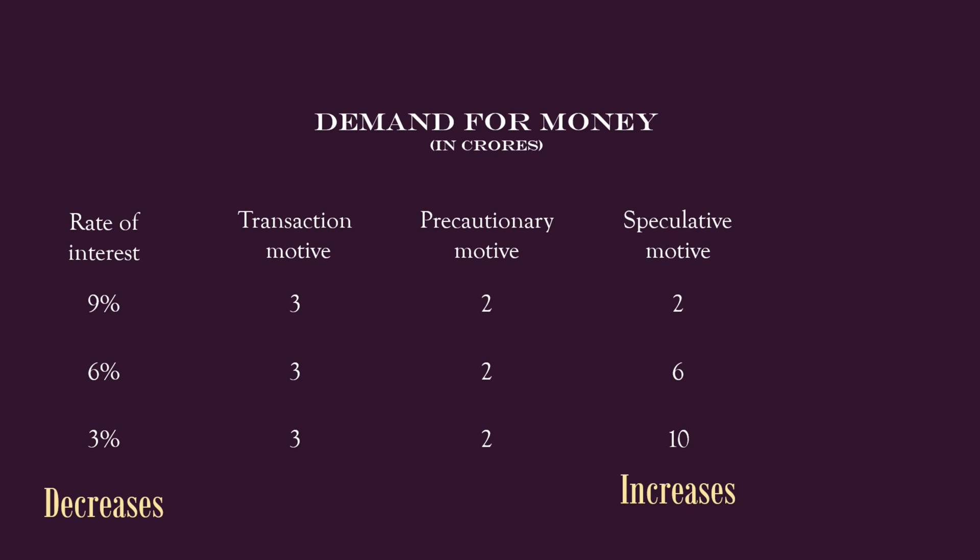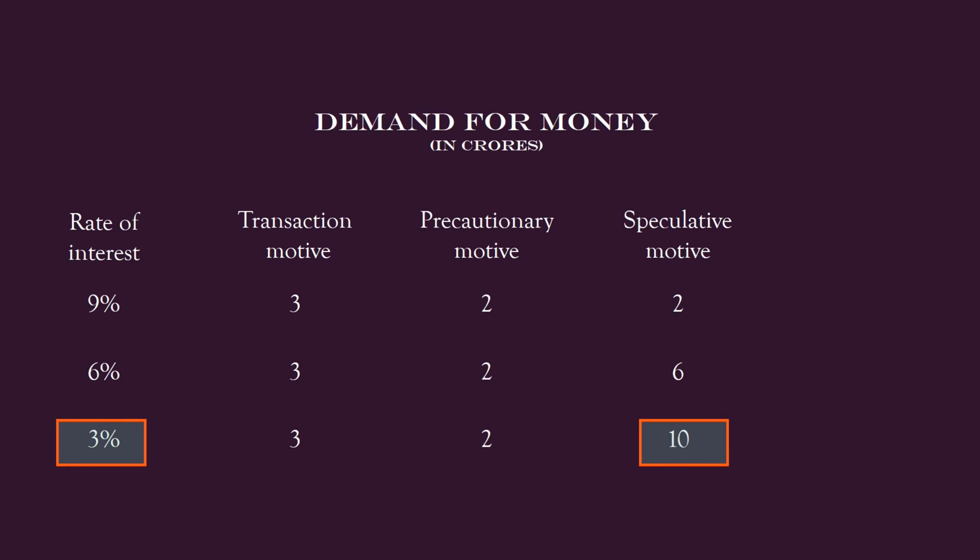Why does the community want to hold more money at a low rate of interest? We know higher bond prices mean a lesser rate of interest. When the current interest rate is low, it means bond prices are high. The community expects a high possibility for bond prices to fall in the near future. If prices fall to a satisfactory level and the community keeps ready cash, it can buy bonds and enjoy a higher interest income. It is this intention that makes the community demand more money at a low rate of interest.